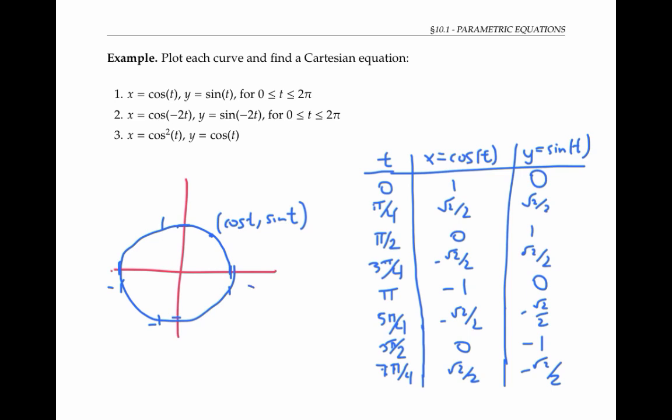Notice that when t equals zero, our curve lies on the positive x axis, and as t increases from zero to two pi, we traverse the curve once in the counterclockwise direction. A Cartesian equation for this unit circle is given by the equation x squared plus y squared equals 1. This follows from the trig identity cosine squared t plus sine squared t equals 1 by substituting in x for cosine t and y for sine t.